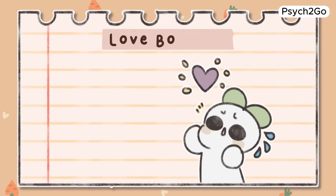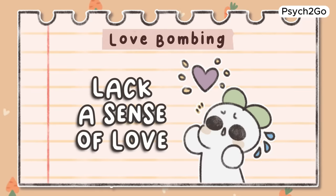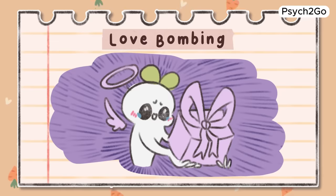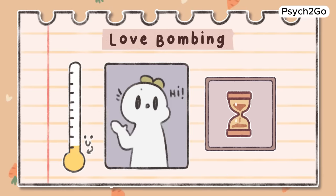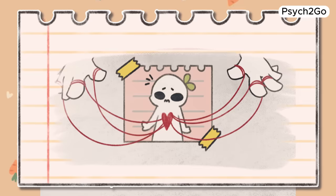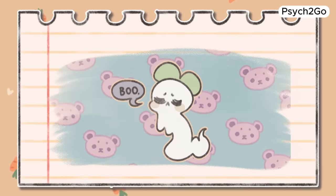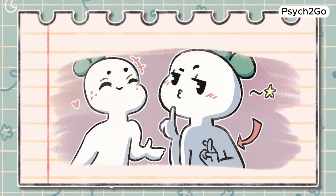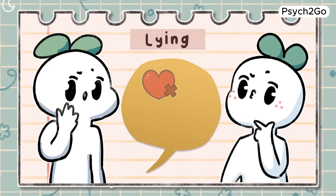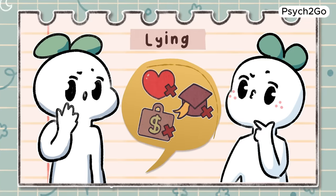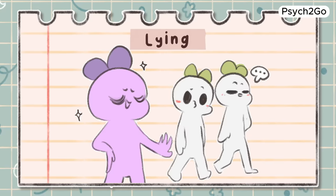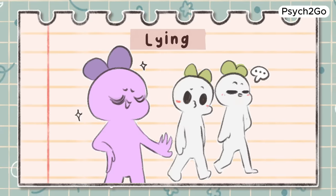Love bombing. This tactic is especially effective for people who lack a sense of love in their lives. If someone pours an impossible amount of love on you, it can be enough to get you to do anything for them. This love doesn't last long, however. Once they have what they want, they will show you little to no attention or even ghost you. Lying. Lying is probably the most commonly used manipulation tactic — avoiding the truth is the most basic, instinctual tactic we know, and many other manipulation tactics are just grand ways of lying.